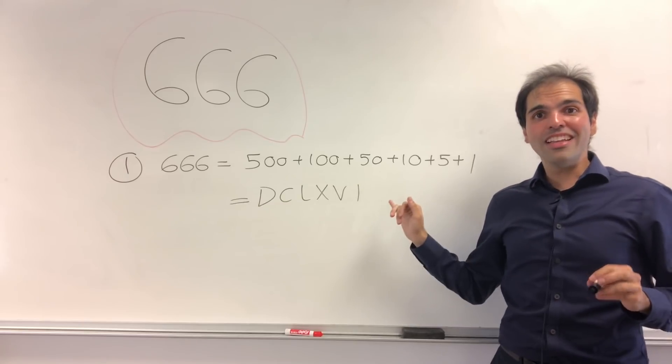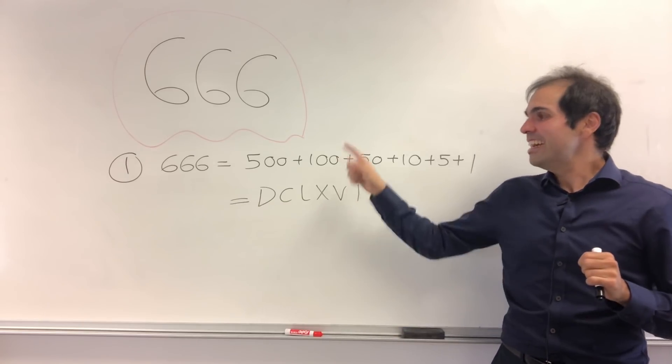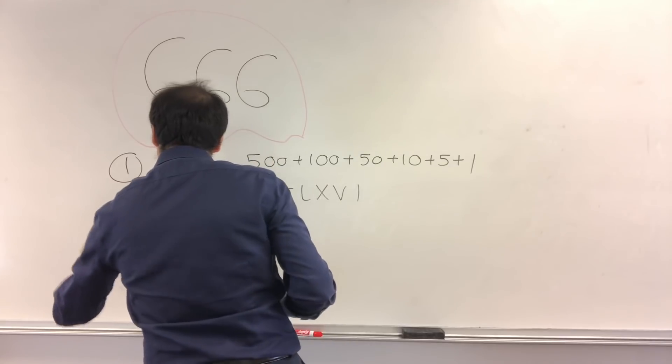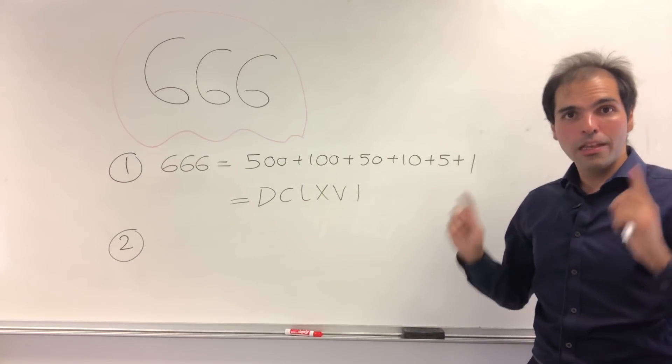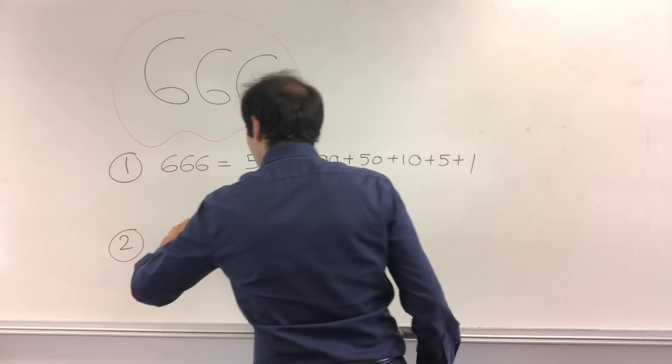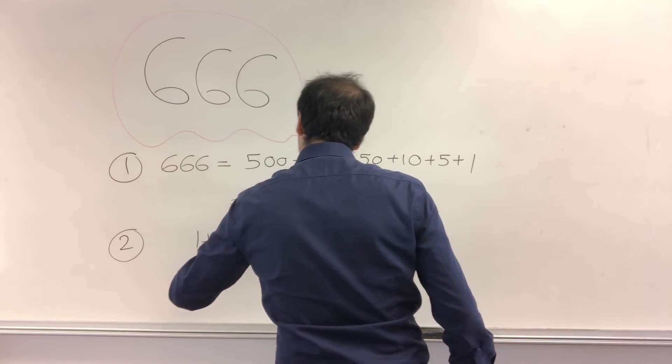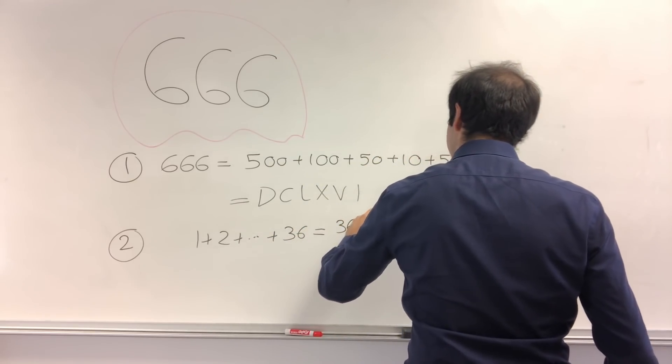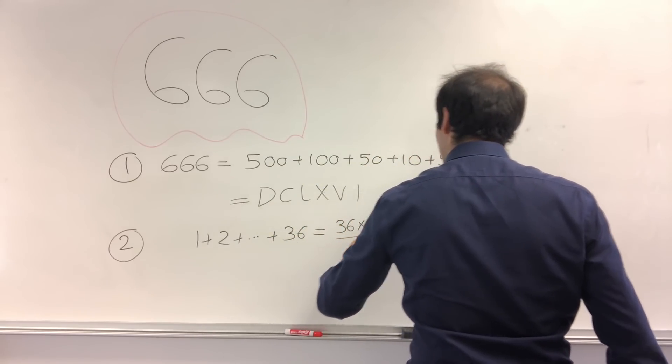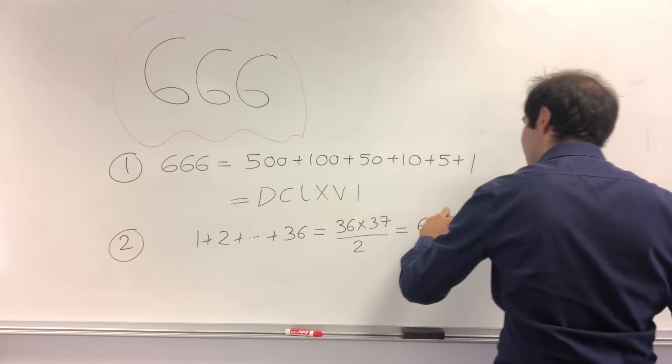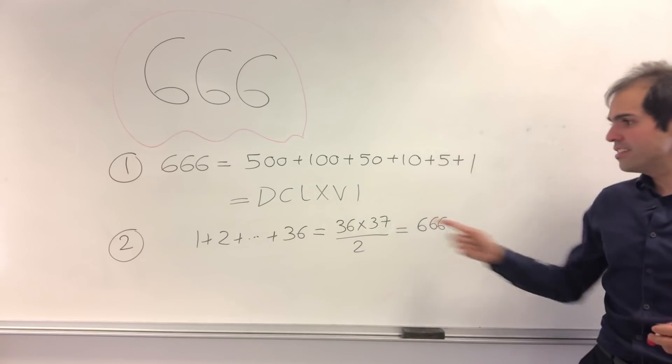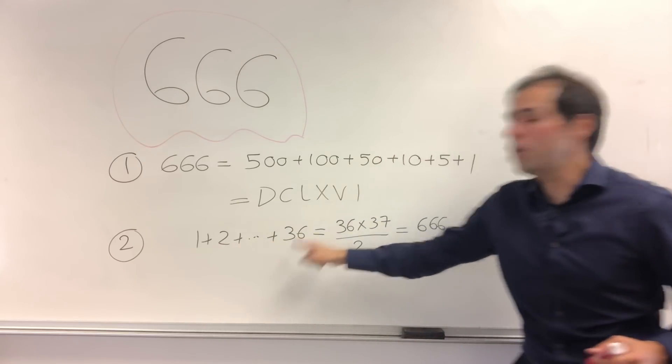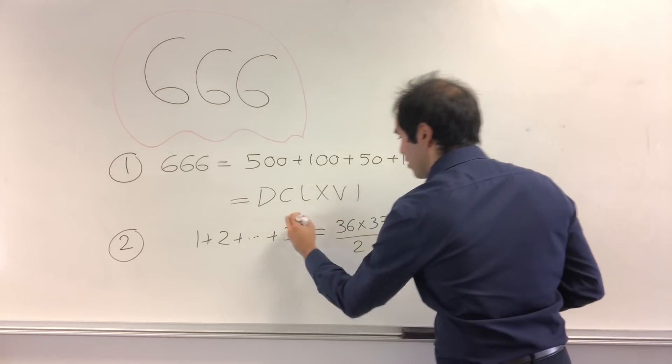Not only that, in terms of numbers and number theory, it has even better properties. Because 666 is what's called a triangular number. Because if you take the sum from 1 up to 36, that's a Gaussian sum. So it becomes 36 times 37 over 2, which becomes 666 if you do the algebra. And so because 666 is the sum from 1, 2, up to a number, this is what's called a triangular number.